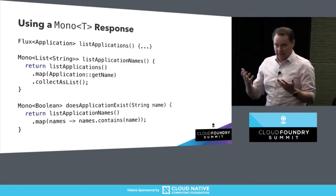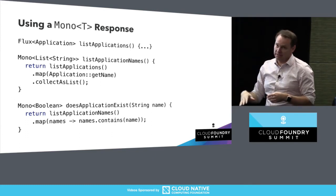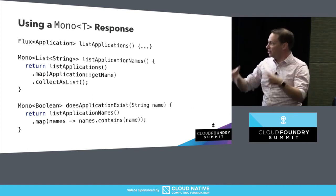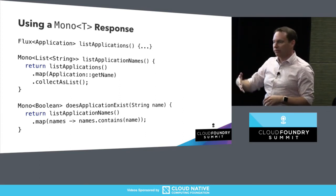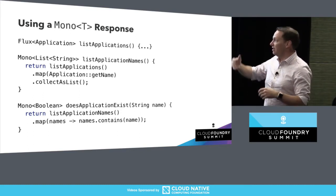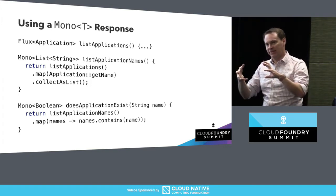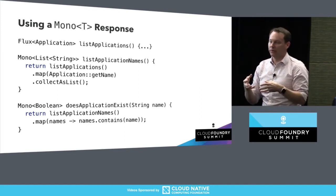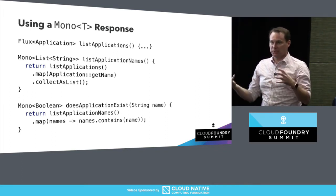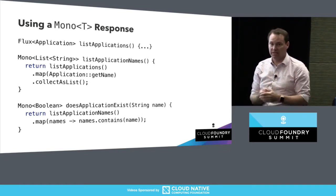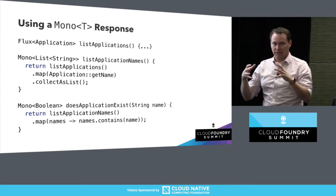Mono works very similarly except it only handles one value. You could list applications, get all the names, then collect all those names as a list — waiting until every element has come through the Flux — and now you have a Mono containing that list. You can then check whether an application name exists in that list. It's often more efficient to collect all names and use a standard list contains check than to work with streaming data going by.